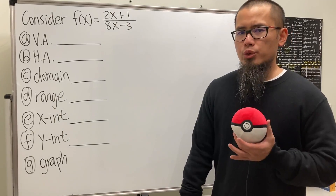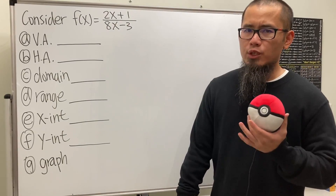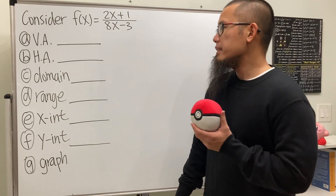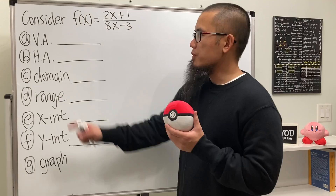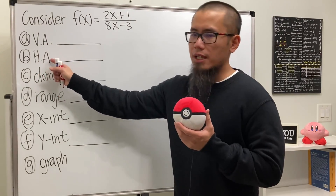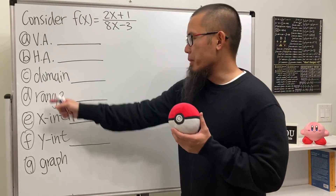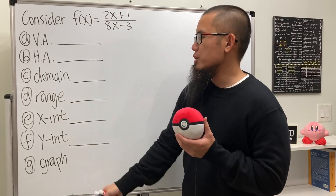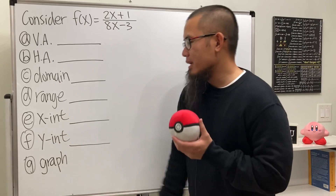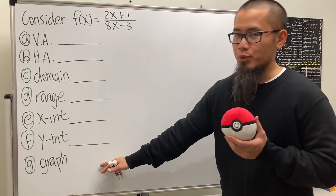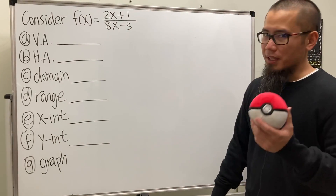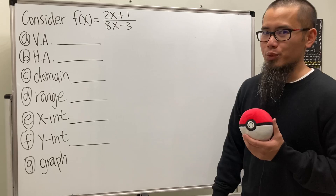This video will show you how to deal with a rational function in general — we are going to find the vertical asymptote, the horizontal asymptote, the domain, the range, the x-intercept, the y-intercept, and then in the end we are going to find the graph for this rational function.